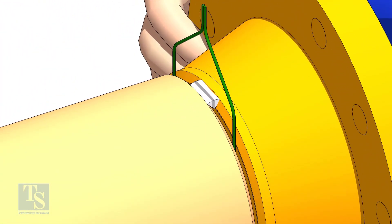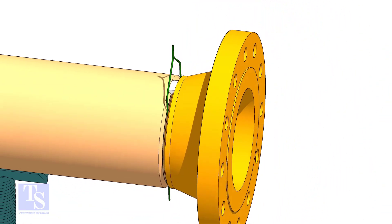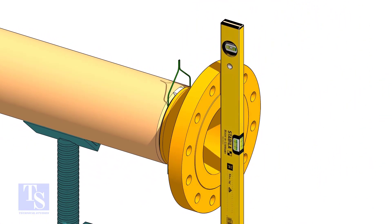Tack weld on the top side of the joint. Check the level of the flange vertically and tack weld on the bottom side of the joint.